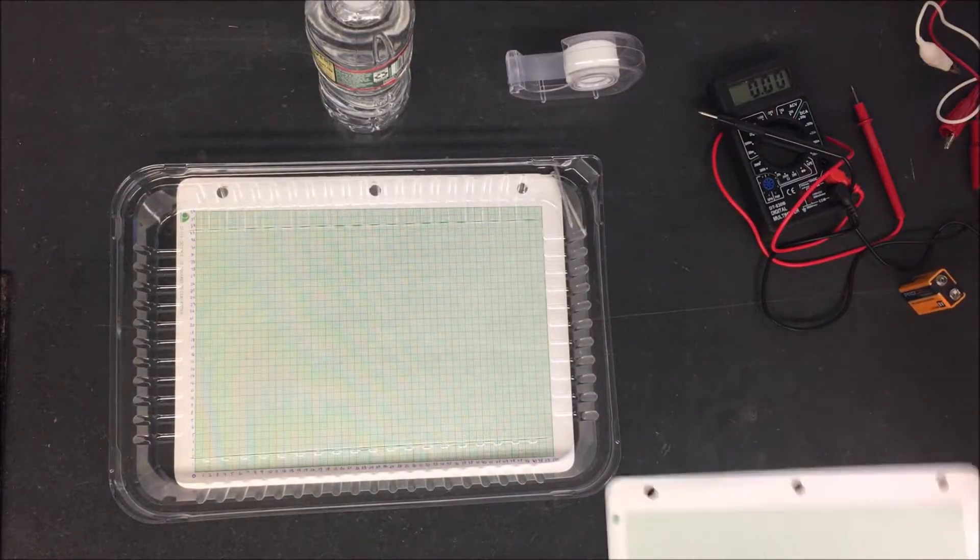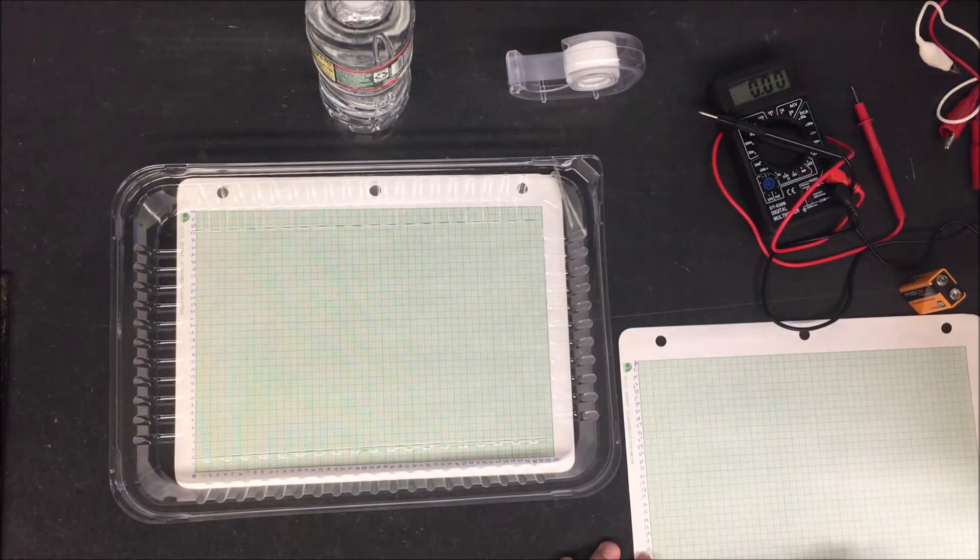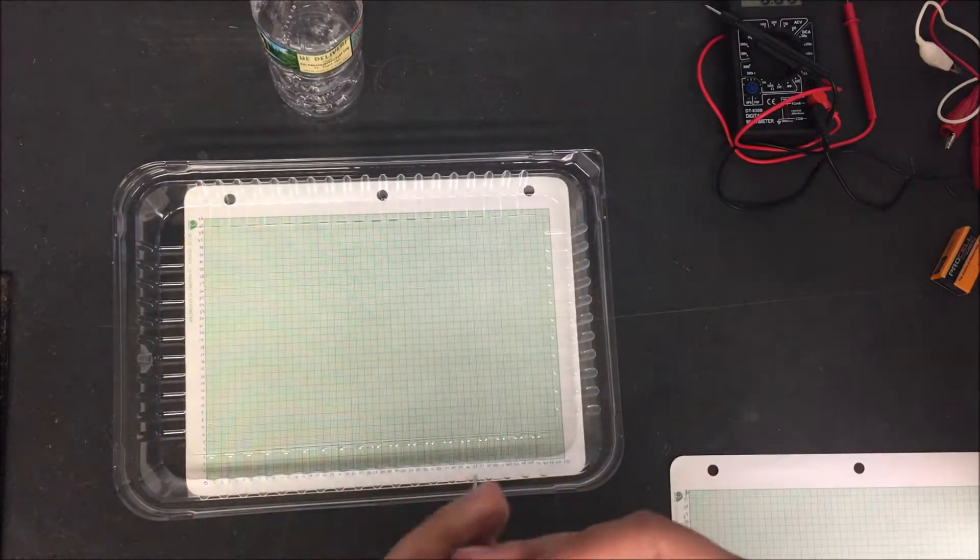With the other graphing paper, make sure to also number on the x and y-axis. You're going to number that and then you're going to be putting on this sheet the electric field lines, how it's going to look like.